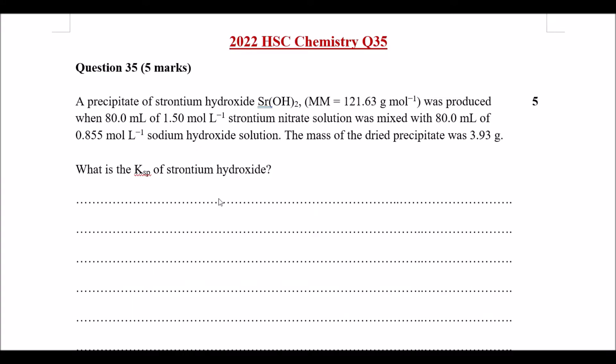I'm going to start by writing the dissociation of this particular precipitate, so Sr(OH)₂ equilibrium arrow Sr²⁺ and OH⁻. So that is our formula that we have here thus far.